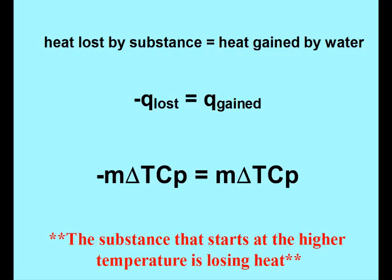The basis of calorimetry is that the heat lost by a substance is going to be gained by another substance. Many times that other substance is water, but it's not always water. So Q lost, or heat lost, is equal to heat gained. When it's losing energy, it's going to have a negative, showing that energy is going from the system to the surroundings.